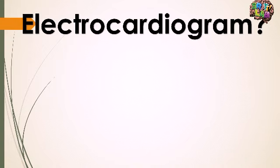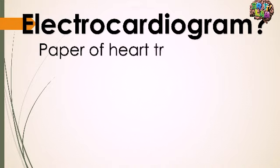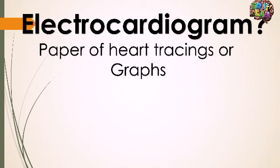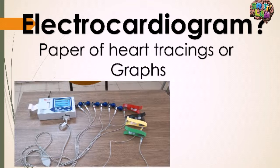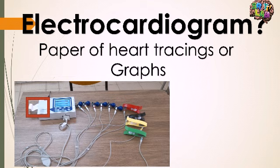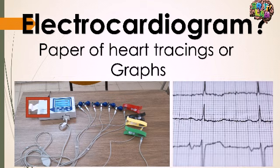The second term is electrocardiogram. Electrocardiogram is the paper of heart tracings or graphs — it is the paper that comes out of the ECG machine, the paper with heart tracings.